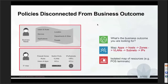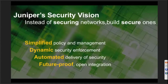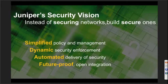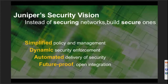Based on these three problem statements, Juniper's security vision is pretty straightforward: don't build a network and try to secure it — try to build a network which is secure from day one. The idea is more towards simplification and automation.